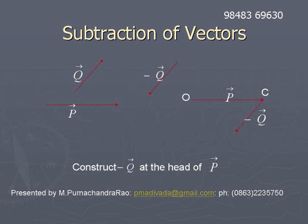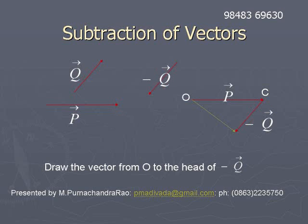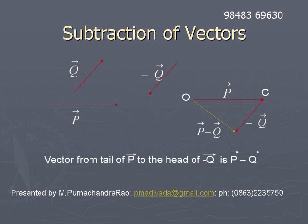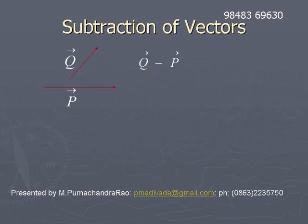Construct the vector minus q̄ at the point C, at the head of p̄. Then join the tail of p̄ to the head of minus q̄. We will get p̄ minus q̄. So it is nothing but adding minus q̄ to p̄.